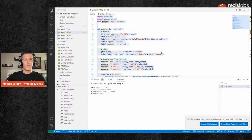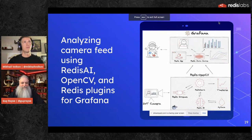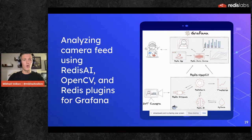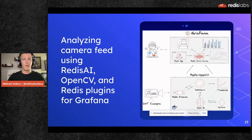That was the prediction of stocks and crypto prices demo. Now let me show one more demo: analyzing camera feed using Redis AI, OpenCV, and Redis plugins for Grafana. This demo is based on a Redis Labs demo from a couple of years ago where video was analyzed using Redis AI and OpenCV library, originally shown when Redis AI was introduced. Back then, it used a special JSON server and Prometheus to display the data. Now we can avoid all of that and streamline the workflow.